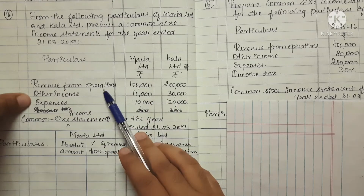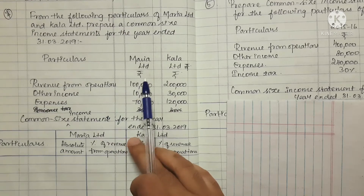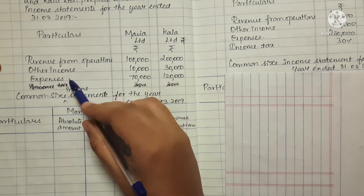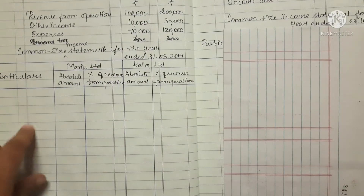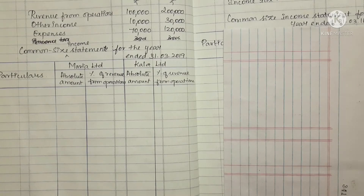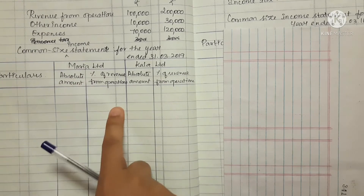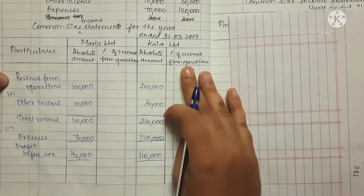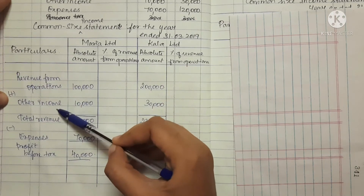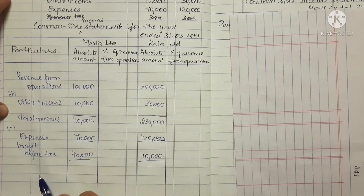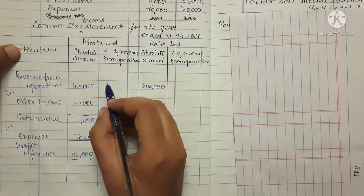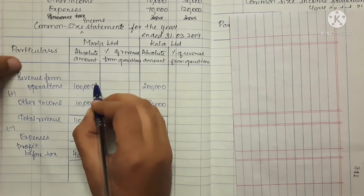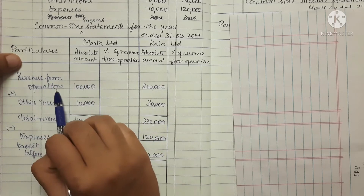The income statement includes revenue from operations, other income, and expenses. We will add the two parts. The format has particulars, absolute amount, and percentage for Maria Limited and Kala Limited. The revenue from operations and other income are listed, followed by minus expenses. We take the common base from revenue from operations, which is set to 100.